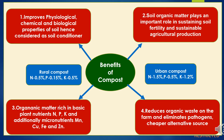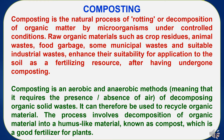In case of rural compost, nitrogen content varies around 0.5%, phosphorus content is 0.15%, and potassium is 0.5%. In case of urban compost, nitrogen content is 1.2 to 1.5%. Composting is the natural process of rotting or decomposition of organic matter by microorganisms under controlled conditions. Raw organic materials such as crop residue, animal waste, food garbage, some municipal waste and suitable industrial waste enhance their suitability for application to the soil as a fertilizing resource after having undergone composting. The process involves decomposition of organic material into a humus-like material known as compost, which is a good fertilizer for plants.